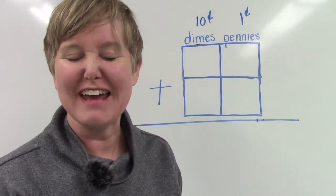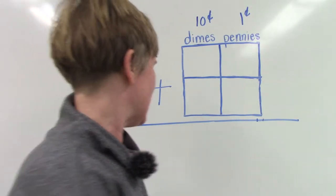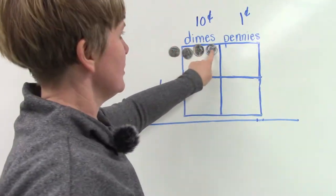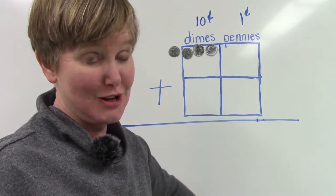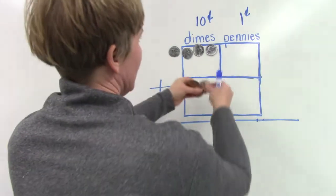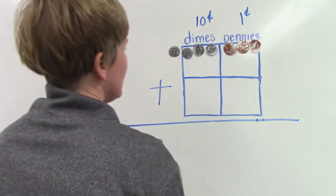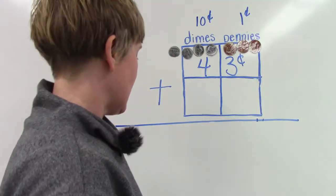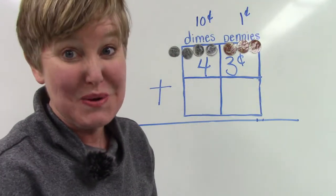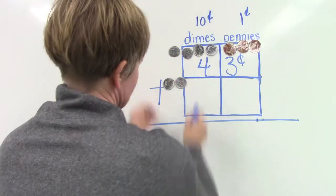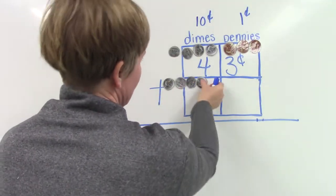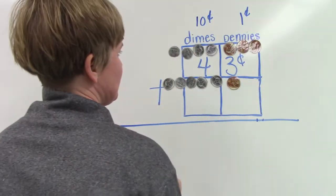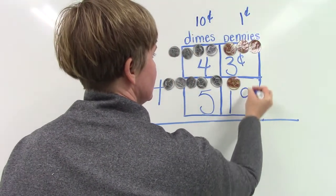We're going to try adding two more numbers together. The first one is the number 43. 10, 20, 30, 40. Now we need three pennies for the 43. One, two, three. We have 43 cents. And we're going to add to that 51 cents. 10, 20, 30, 40, 50, one. 51 cents.